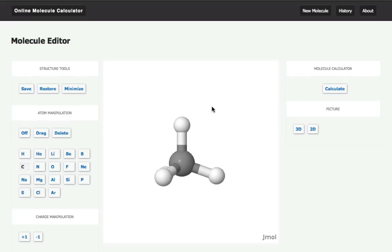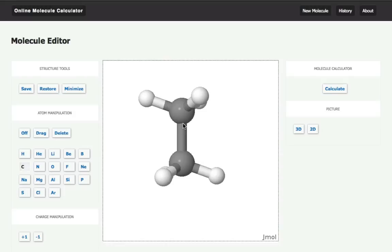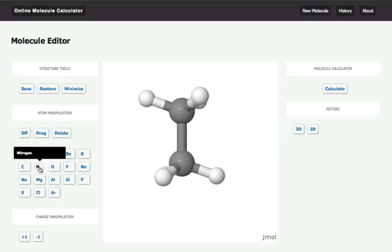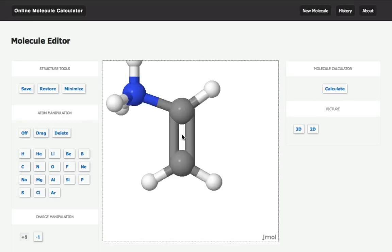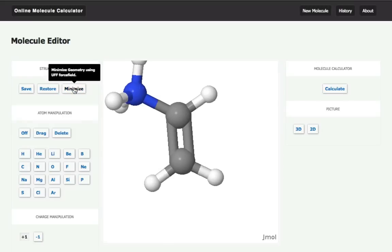For example, I can add another carbon here, add a nitrogen here, and change the charge of this atom so it's now NH3+. I can make this a double bond, minimize it to get a better structure, and now I'm ready for a calculation on this molecule.